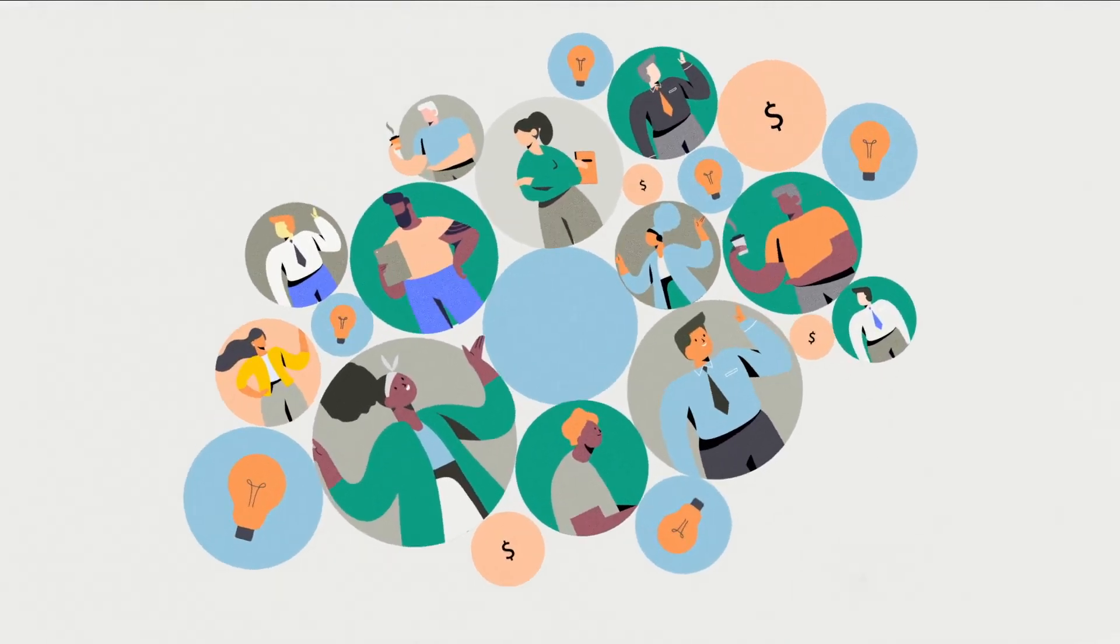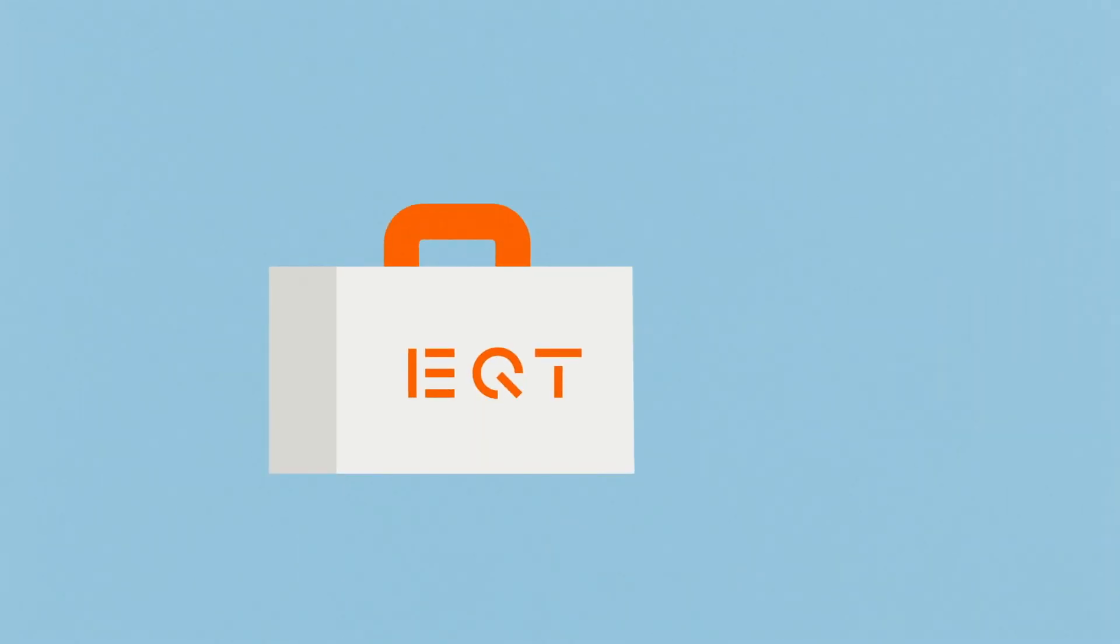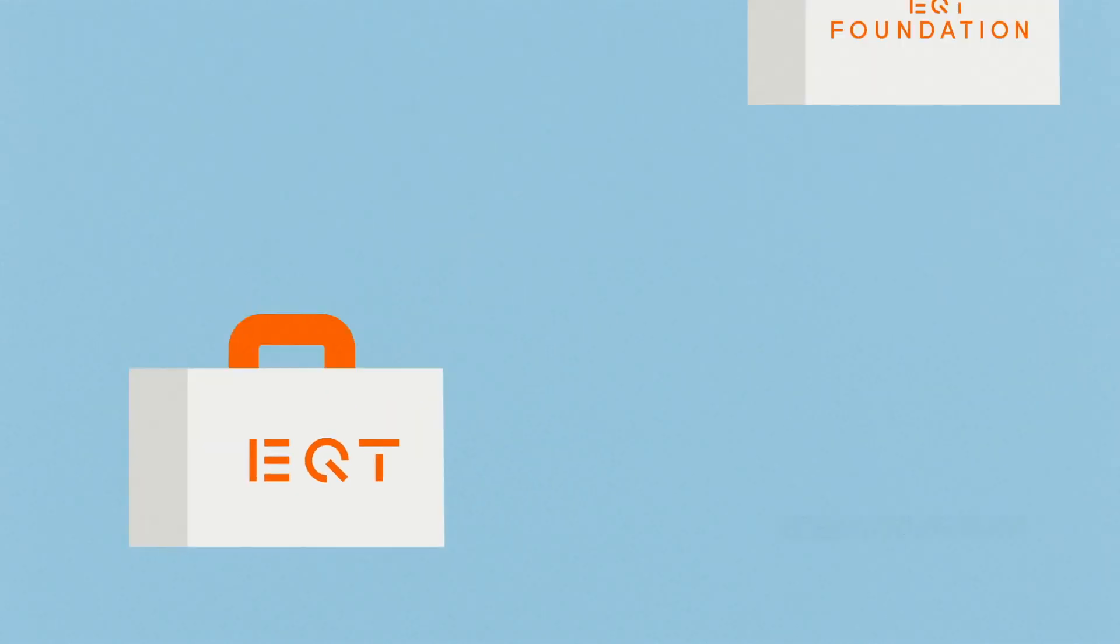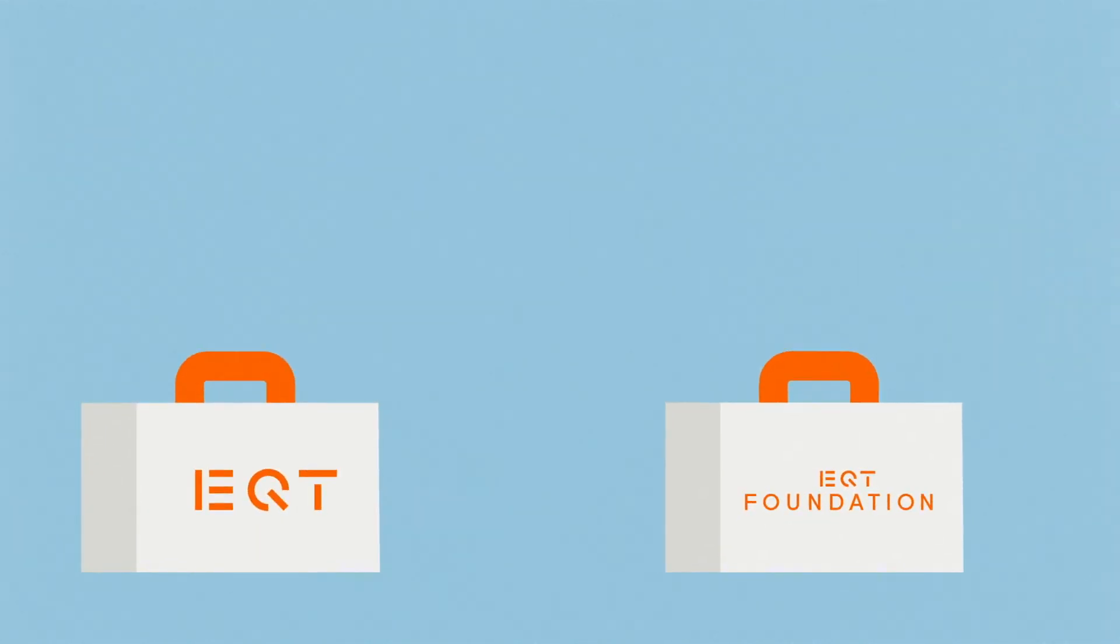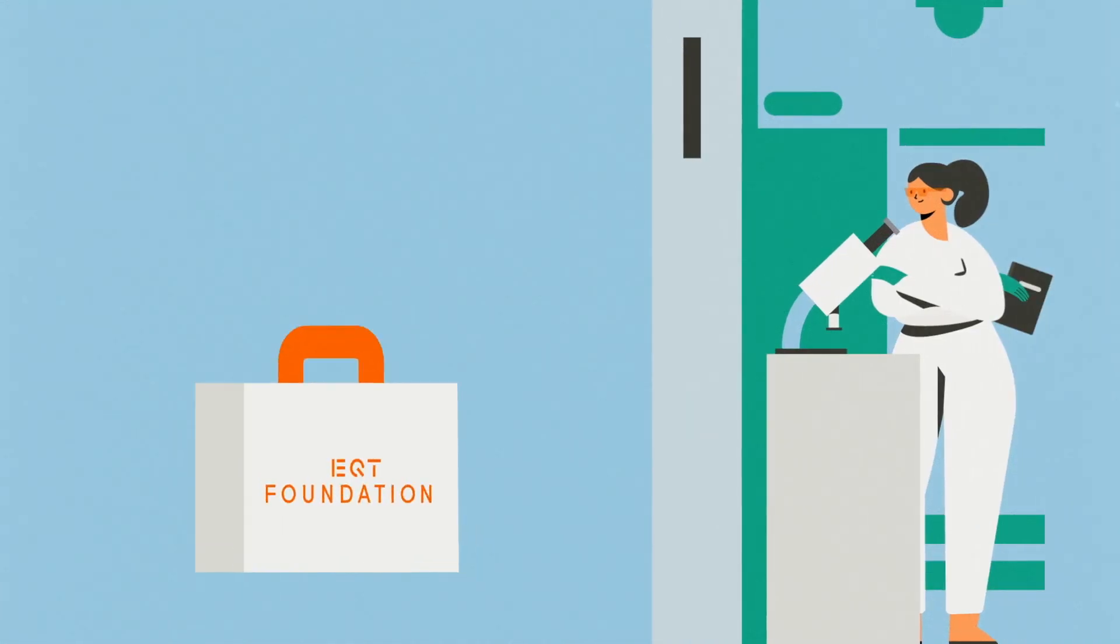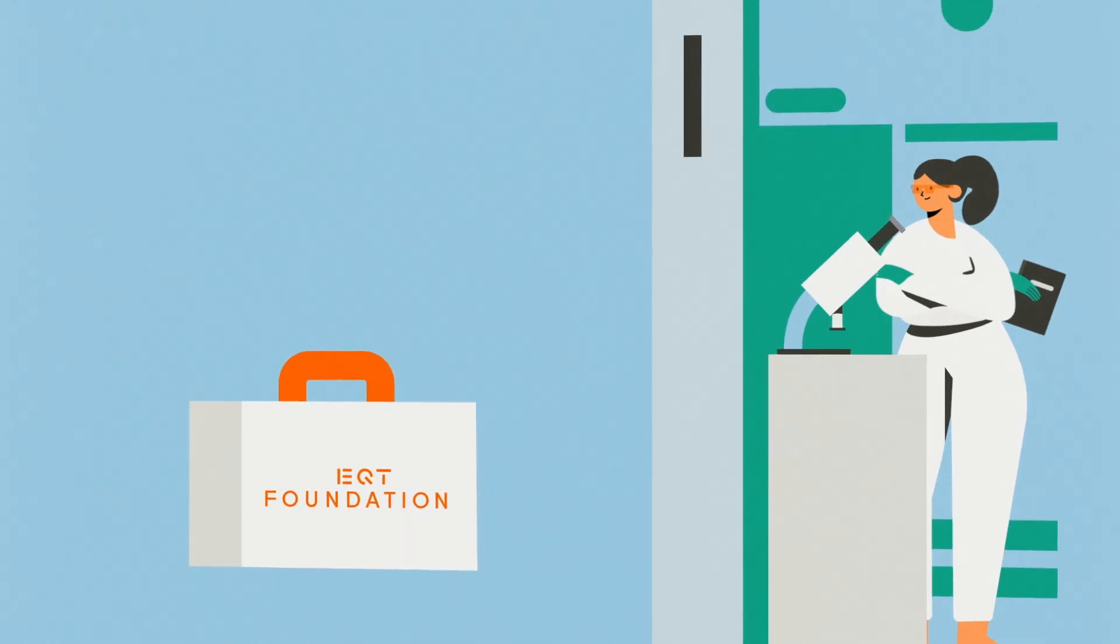The EQT Foundation owns 1% of EQT AB and will use its ownership to retain long-term influence in EQT AB via a seat in its nomination committee and use its dividends and donations to benefit society at large. In EQT, we believe that everything can be improved.